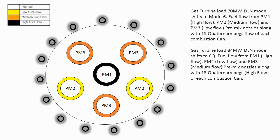When 7FA gas turbine load reaches 70 megawatt, DLN mode shifts from mode 3E to mode 6. Fuel flows from PM1, PM2, and PM3 of each combustion can along with 15 quaternary pegs. Note that fuel flow is high from PM1, low from PM2, while from PM3 fuel flow is medium.